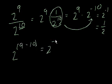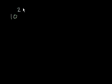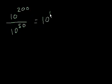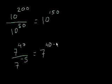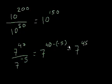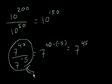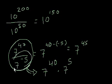Let's do more examples. 10 to the 200th over 10 to the 50th equals 10 to the 200 minus 50, which is 10 to the 150. Likewise, 7 to the 40th power over 7 to the negative 5 equals 7 to the 40 minus negative 5, which equals 7 to the 45th. We could also rewrite that as 7 to the 40th times 7 to the 5th, since 1 over 7 to the negative 5 is 7 to the 5th, giving us 7 to the 45.